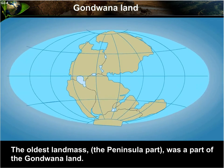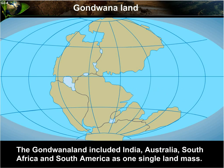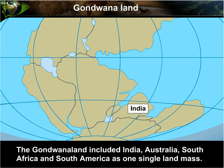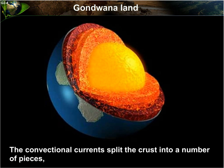Gondwana land, the oldest landmass — the peninsular part was part of Gondwana land. Gondwana land included India, Australia, South Africa, and South America as one single landmass. The convectional current split the crust into a number of pieces.